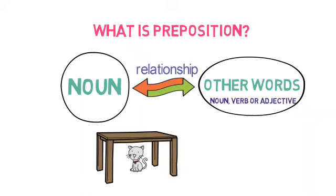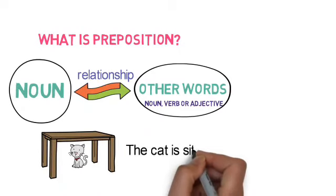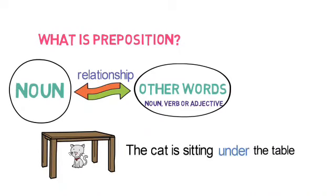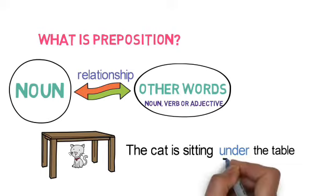In the picture you can see a cat has come and it is sitting under the table. The word 'under' is showing the link between the cat and the table. The cat is the noun and the table is the other word. Without the word 'under' you can't express the complete, clear relationship between the cat and the table. So 'under' is an example of a preposition.